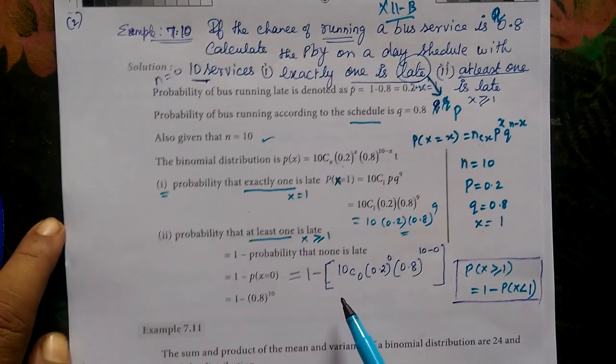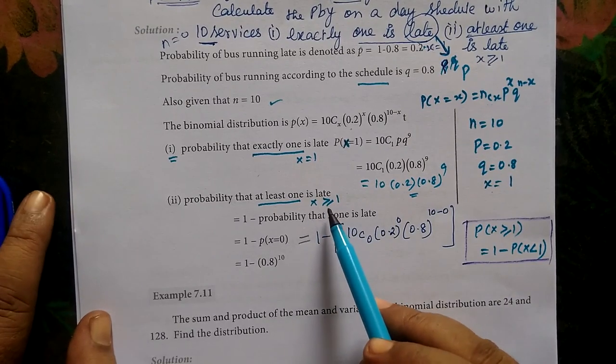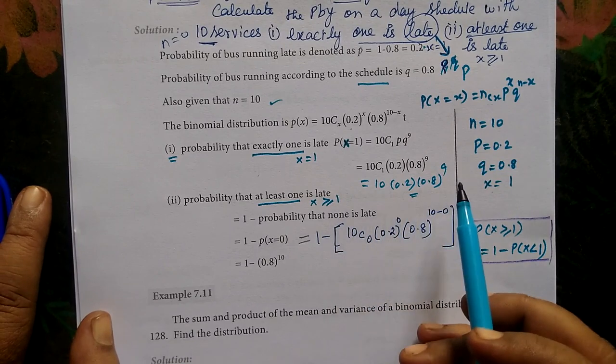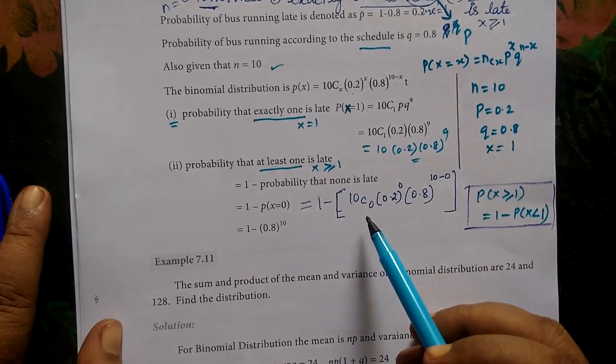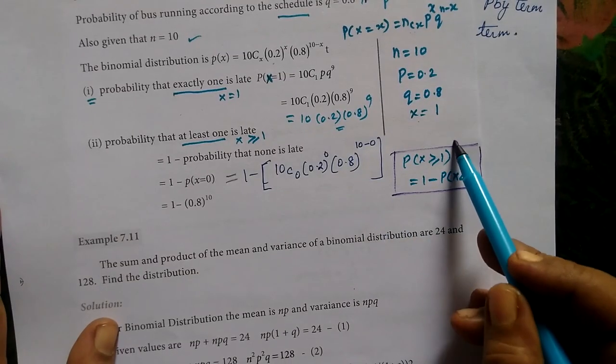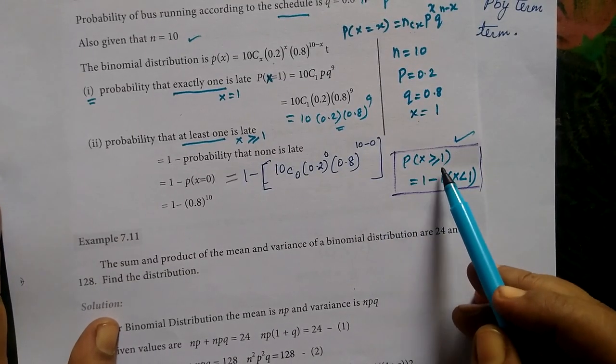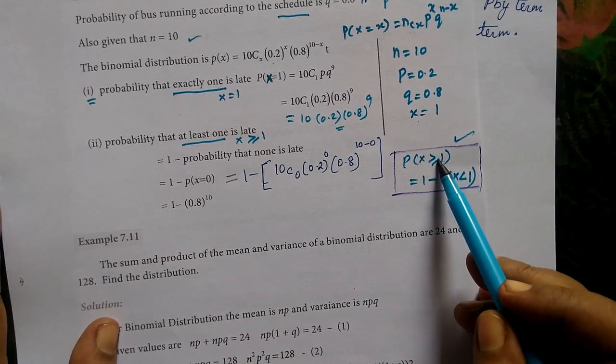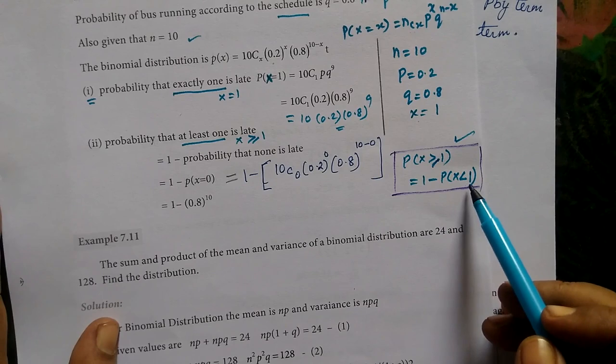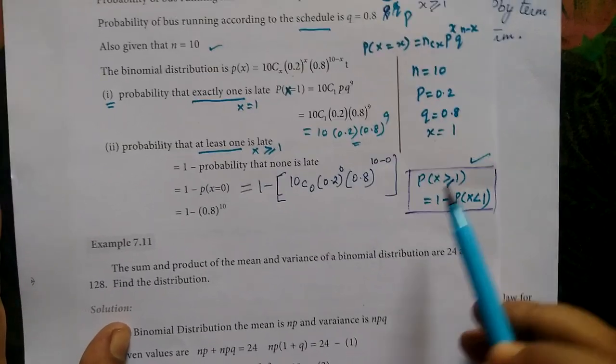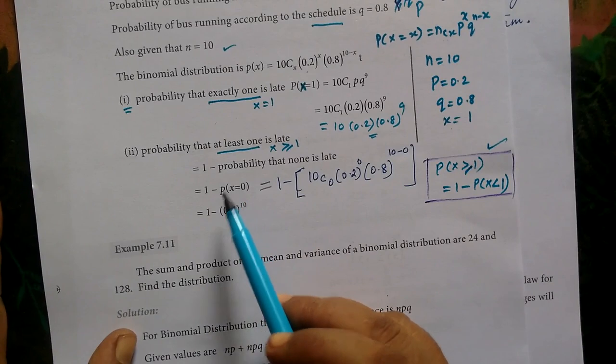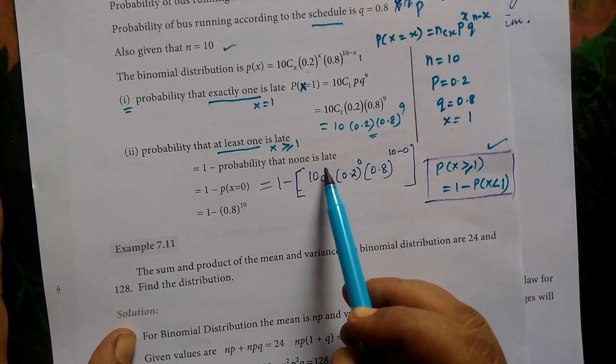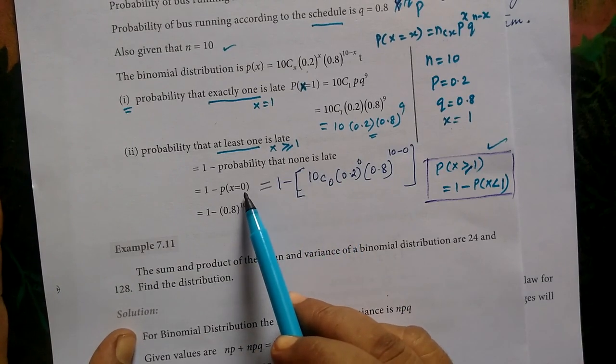Then the probability that at least one is late. The probability that none is late. So P of x equals 0.